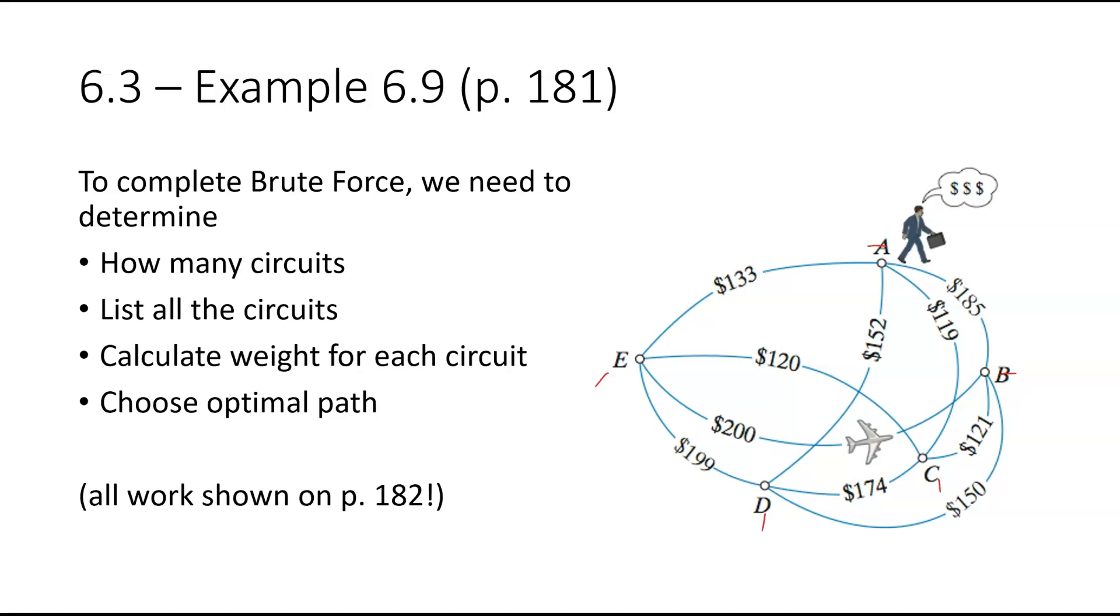So remember, to find out how many circuits, it's the number of vertices minus 1 factorial. So that's 4 factorial. So that's 4 times 3 times 2 times 1. So that's 24 circuits, which means I'm going to have a list of 24. So I have to list out all 24. And again, go to page 182 to see it. But I'll show you one possible route. So that would be A to B. B to C. C to D. D to E. And E back to A.